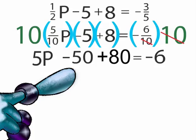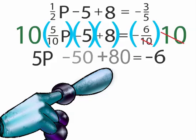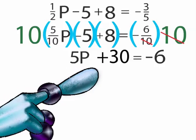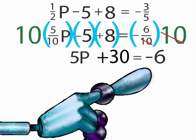Negative 50 plus 80 equals 30. Our equation now reads, 5P plus 30 equals negative 6.